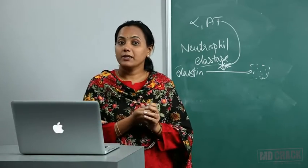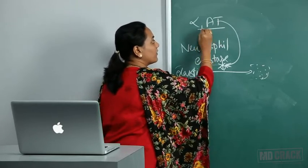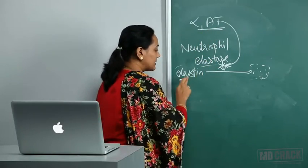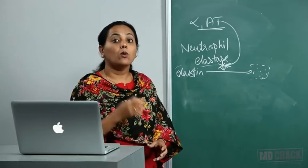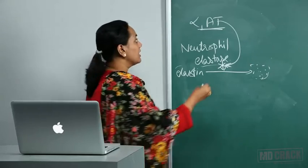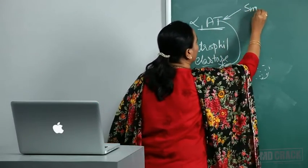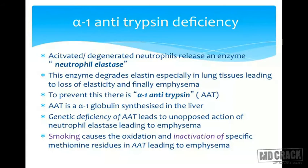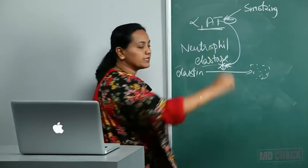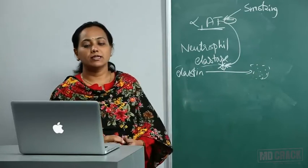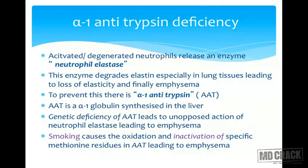In alpha-1 antitrypsin deficiency, if there is a genetic deficiency of AAT, neutrophil elastase will degrade elastin, leading to emphysema. Smoking also leads to lung disorders through a direct effect on alpha-1 antitrypsin — it causes inactivation of certain methionine residues in AAT. When AAT is inactivated by smoking, neutrophil elastase again degrades elastin, leading to emphysema. This highlights the importance of elastin and its protection by alpha-1 antitrypsin.